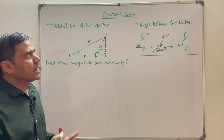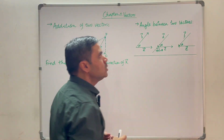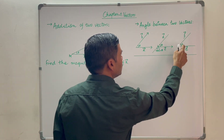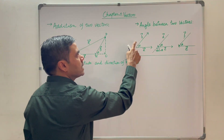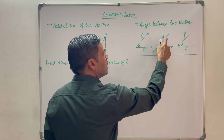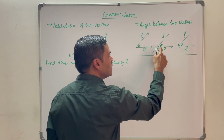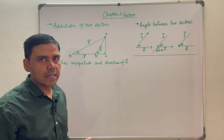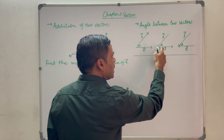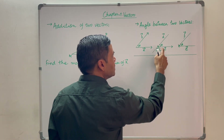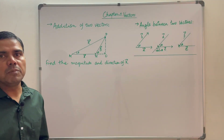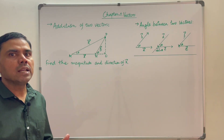Before moving ahead with the addition of two vectors, let us see the angle between two vectors. Two vectors can be connected either tail to tail, head to tail, or head to head. In the first and third cases — when connected tail to tail or head to head — the angle is considered theta. However, when the vectors are connected head to tail, the angle between them is not theta but 180 minus theta. To get this angle, you need to produce one of the vectors. The angle formed between the produced vector and the other vector will be 180 minus theta. That will be the angle between two vectors when they are connected head to tail.